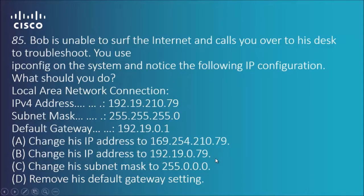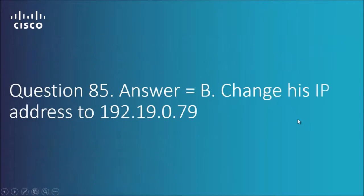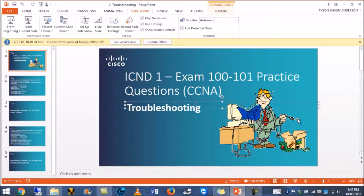The answer is B. If we look at the subnet mask — three 255s — that means any IP address in this network has the first three octets assigned to 192.19.0, as suggested by the subnet mask. Three 255s occupy those three octets, which means the last octet of 210 is completely incorrect. So B is the answer — he needs to change his IP address to the correct one.